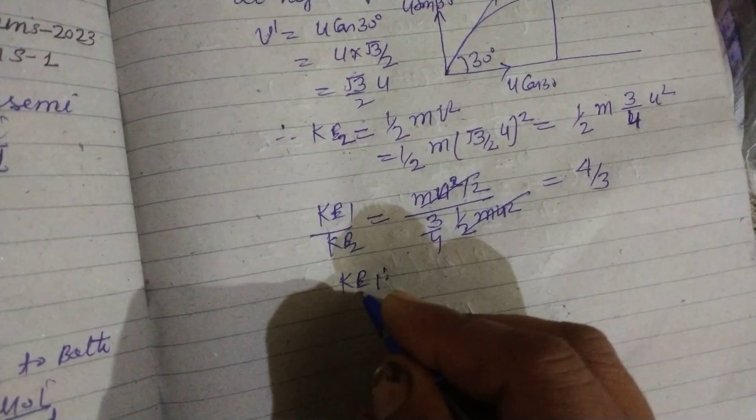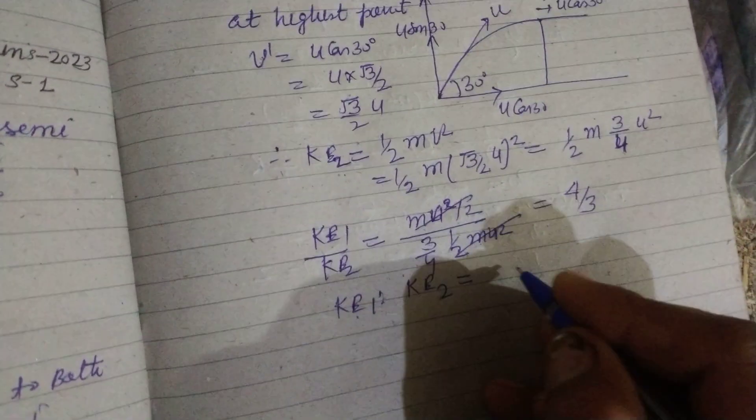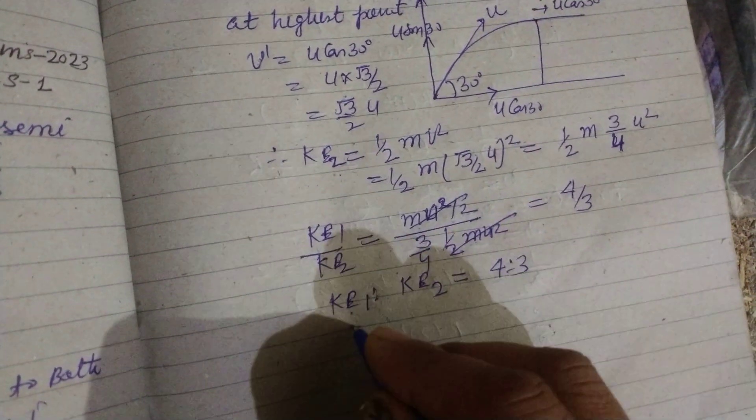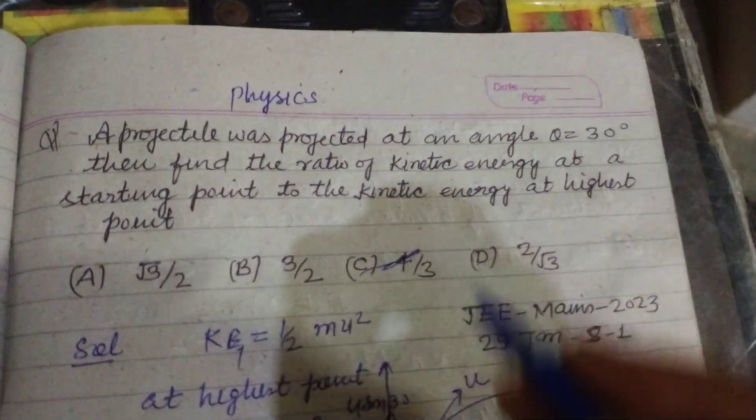Therefore kinetic energy at initial point to kinetic energy at highest point is 4 ratio 3. So answer of this question is option 4 ratio 3.